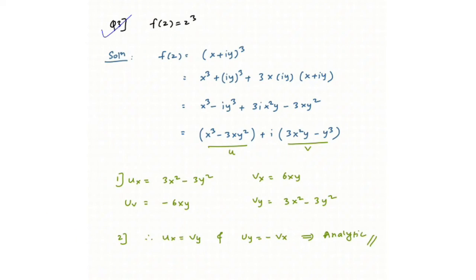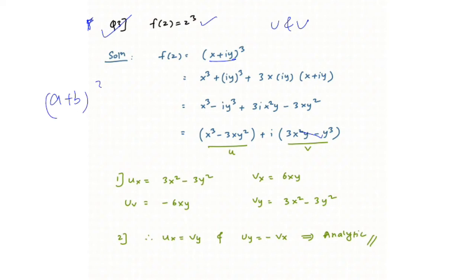Question number three — a level-up question. f(z) = z³. Here you don't have the real and imaginary parts directly, so you must perform an operation to get them. Since z = x + iy, expand (x + iy)³ using the formula a³ + b³ + 3ab(a + b). Also remember: i = √(−1), i² = −1, i³ = −i, i⁴ = +1.